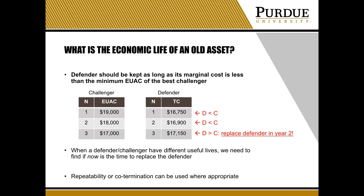On the other hand, we might want to know what the economic life of an old asset or a Defender is. A Defender should always be kept as long as its marginal cost is less than the minimum EUAC of the Challenger. Looking at the two tables here, the Challenger table shows the EUAC for three years and the Defender's table shows the total cost for three years. In the first two rows, the total cost of the Defender is cheaper than the EUAC of the Challenger, but in the third row, the total cost of the Defender is more expensive. So we want to replace the Defender in year two, and this corresponds to the economic life of the Defender.